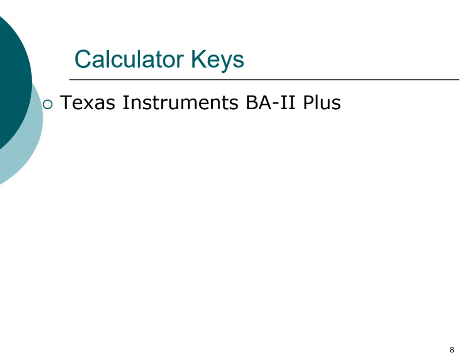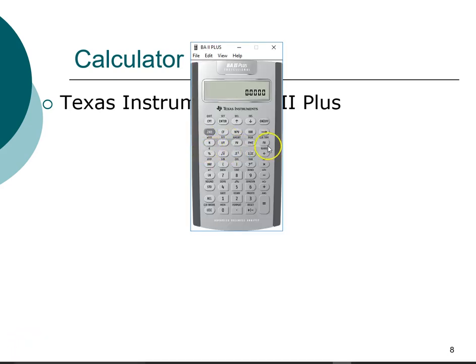On the Texas Instruments calculator, the time value of money registers are located in the center of the calculator. This highlighted line — your calculator may have a different color, but the same registers should be present. These five registers in the center are related to the time value of money. FV stands for future value, PV stands for present value, and so forth.